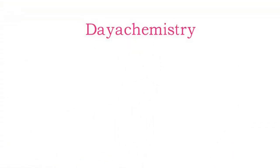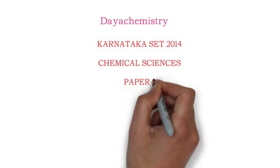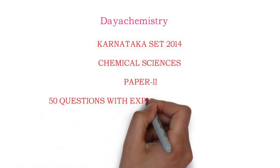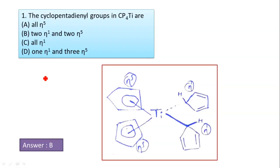Welcome to the IAC Chemistry YouTube channel. Karnataka SET 2014 Chemical Science Paper 2, 50 questions with explanatory answers, Part 1. Question 1: The cyclopentadienyl groups in CP4Ti are all η5, two η1 and two η5, all η1, or one η1 and three η5?